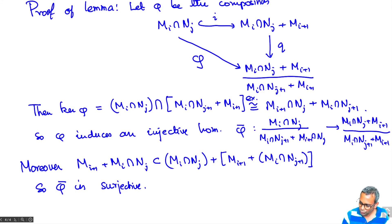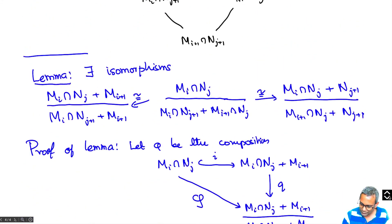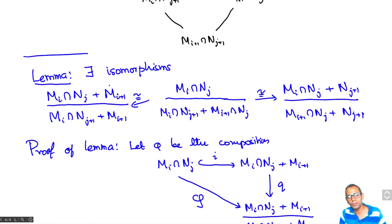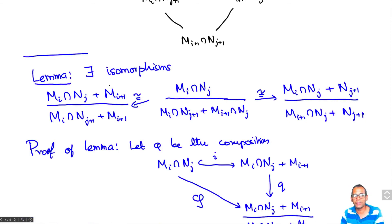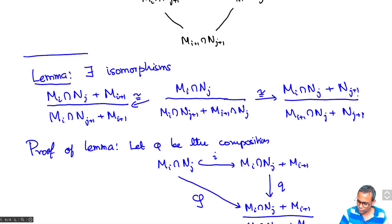Surjectivity follows because M_{i+1} + M_i ∩ N_j is contained in M_i ∩ N_j + M_{i+1} + M_i ∩ N_j, so φ is surjective and therefore φ-bar is surjective. This shows the two modules on the left are isomorphic. By interchanging the roles of M with N and i with j, we can also prove that the two modules on the right are isomorphic.